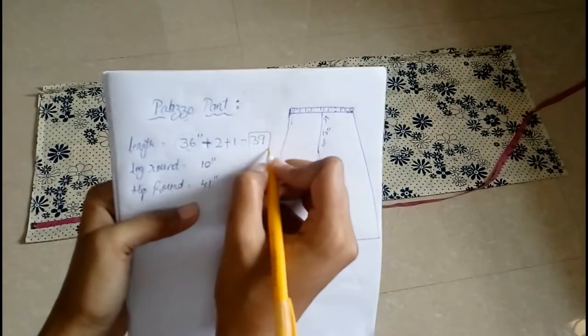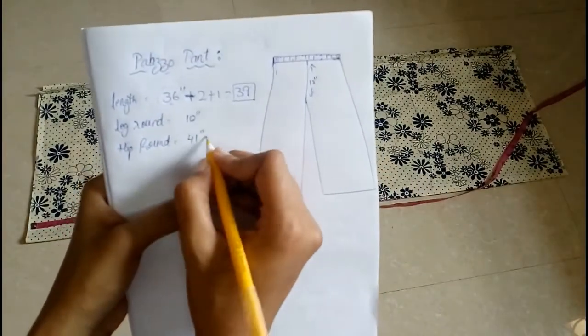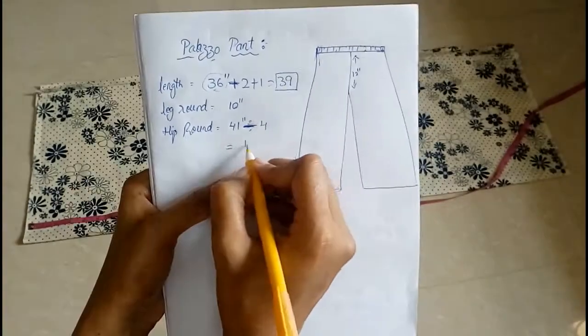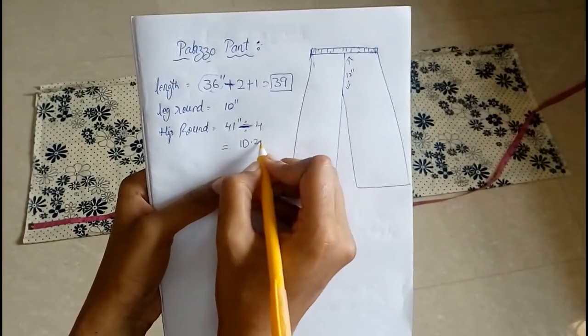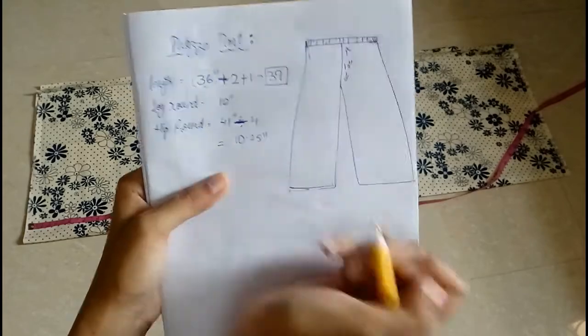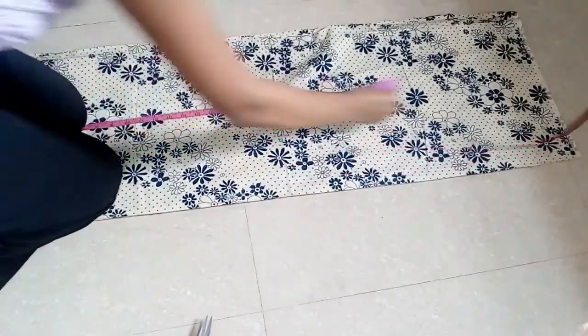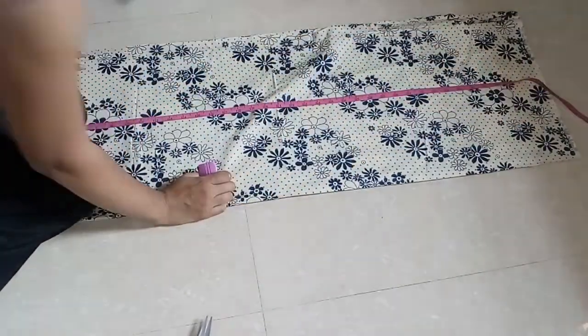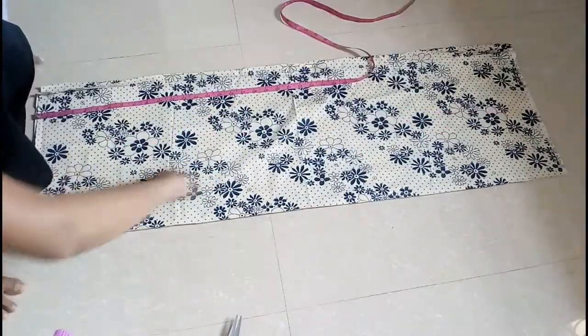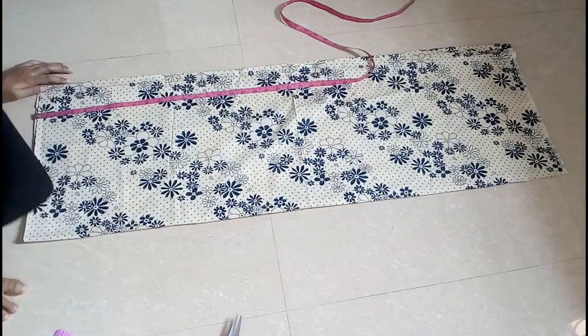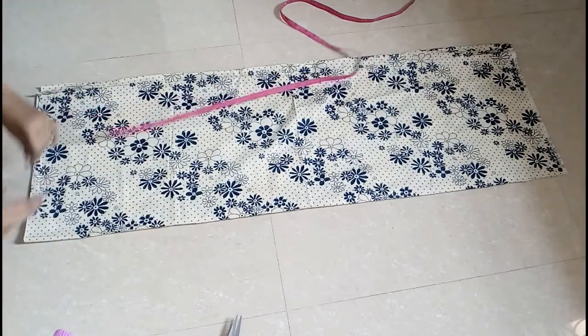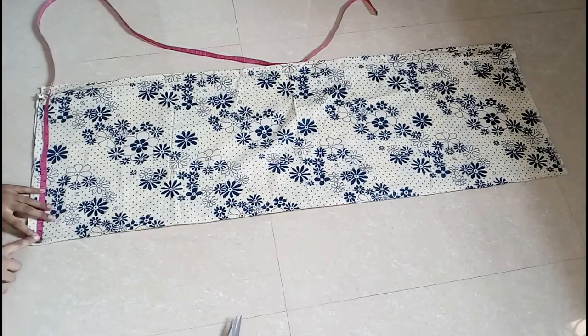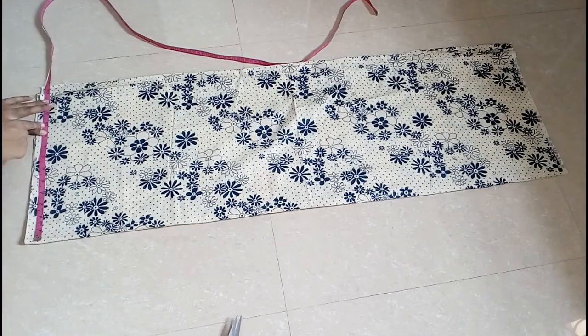Our total length is 39, and hip round we have to divide it by four, 10.25 inches. So that is the total length, 39 inches, and we will be marking hip round, that is one-fourth of the hip round over here, 10.25.